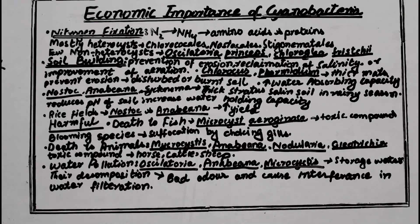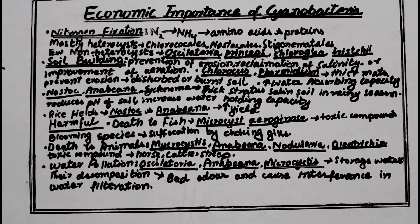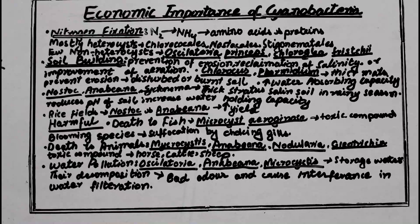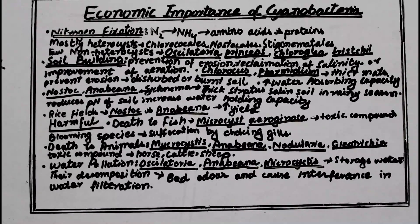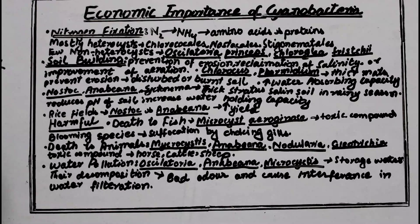For example, Chroococcus produces a thick mass on the surface of the soil, and in this way prevents erosion on burnt and disturbed soil. Even in damaged soil, erosion can be prevented. Additionally, cyanobacteria increase the water absorbing capacity of the soil.